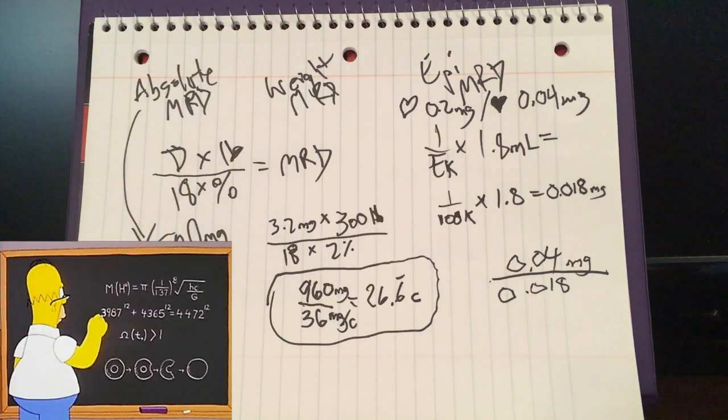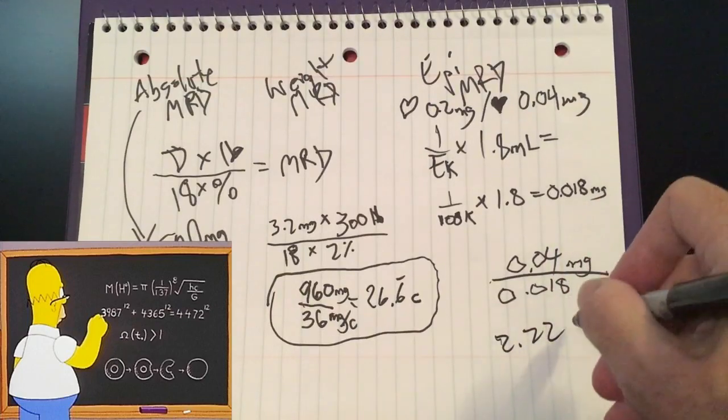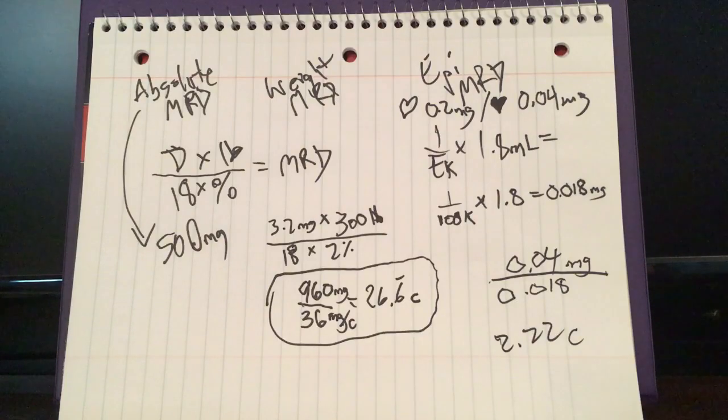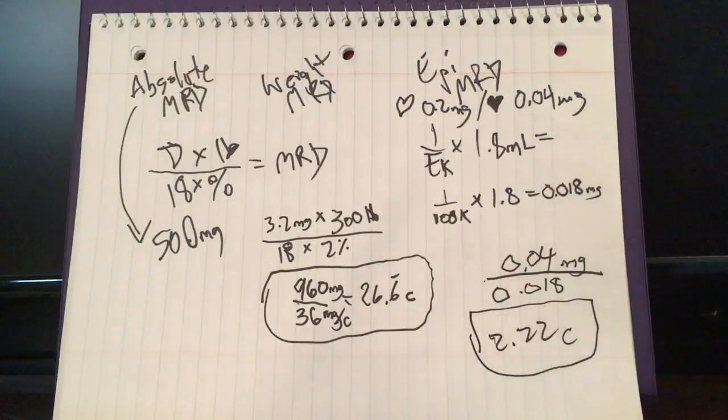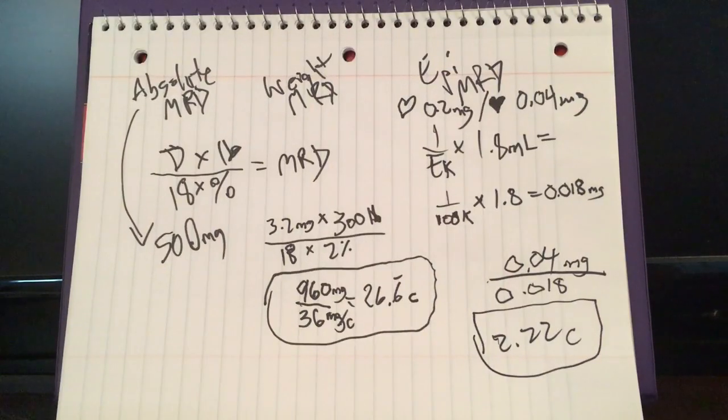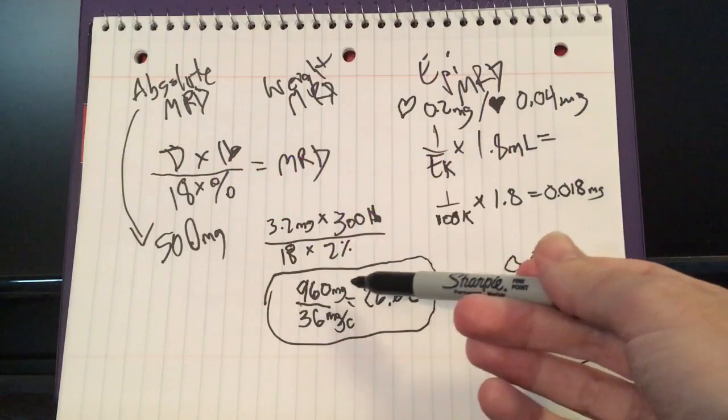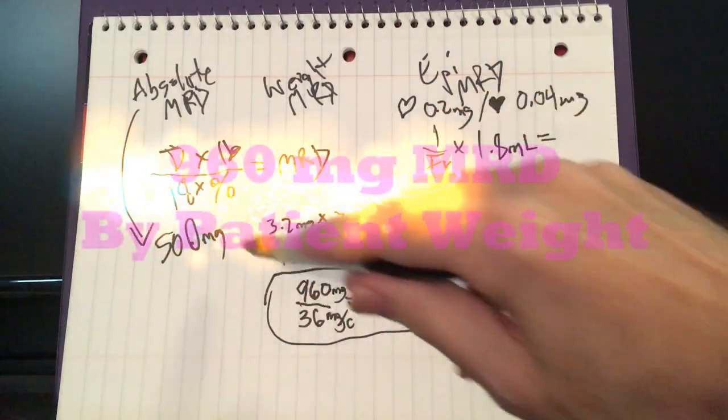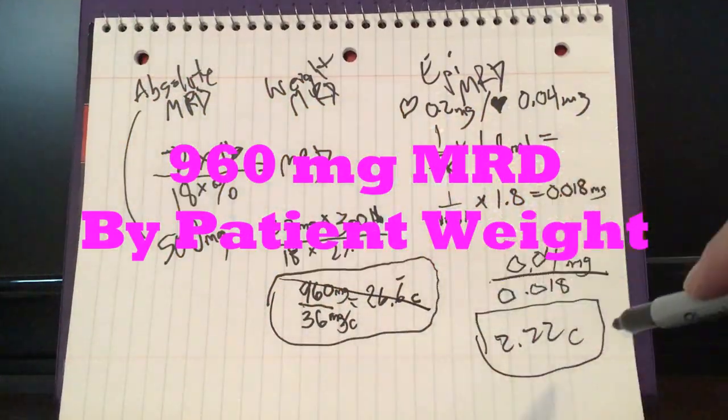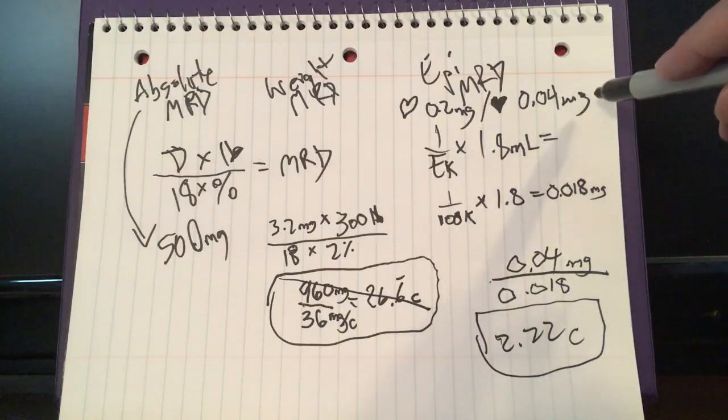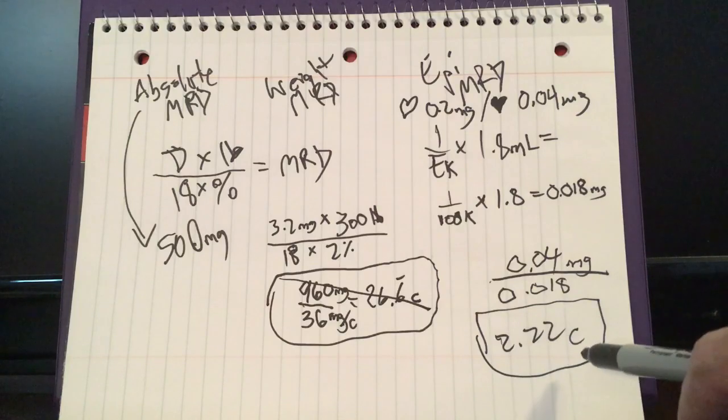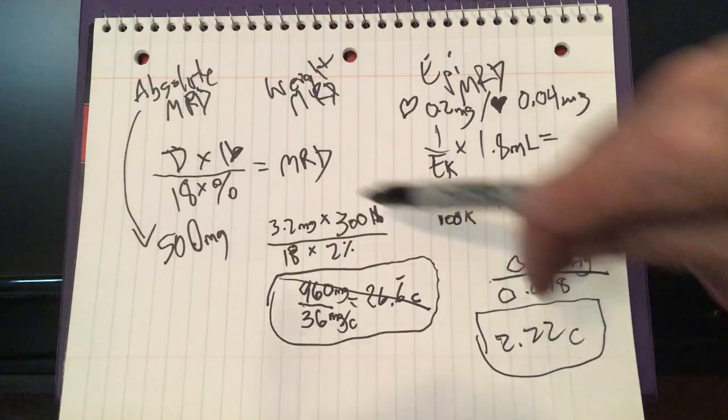So let's look at it all. Okay, so we got an absolute MRD of 500 milligrams. We have a weight MRD of 26.6 carpules, also known as 960 milligrams. So we know it can't be this guy because we went way, way above the absolute MRD. But then we have this epi MRD, because we have to check this definitely because it's a heart disease patient. And we have 2.2 carpules. So this is in carpules, but this is in milligrams.